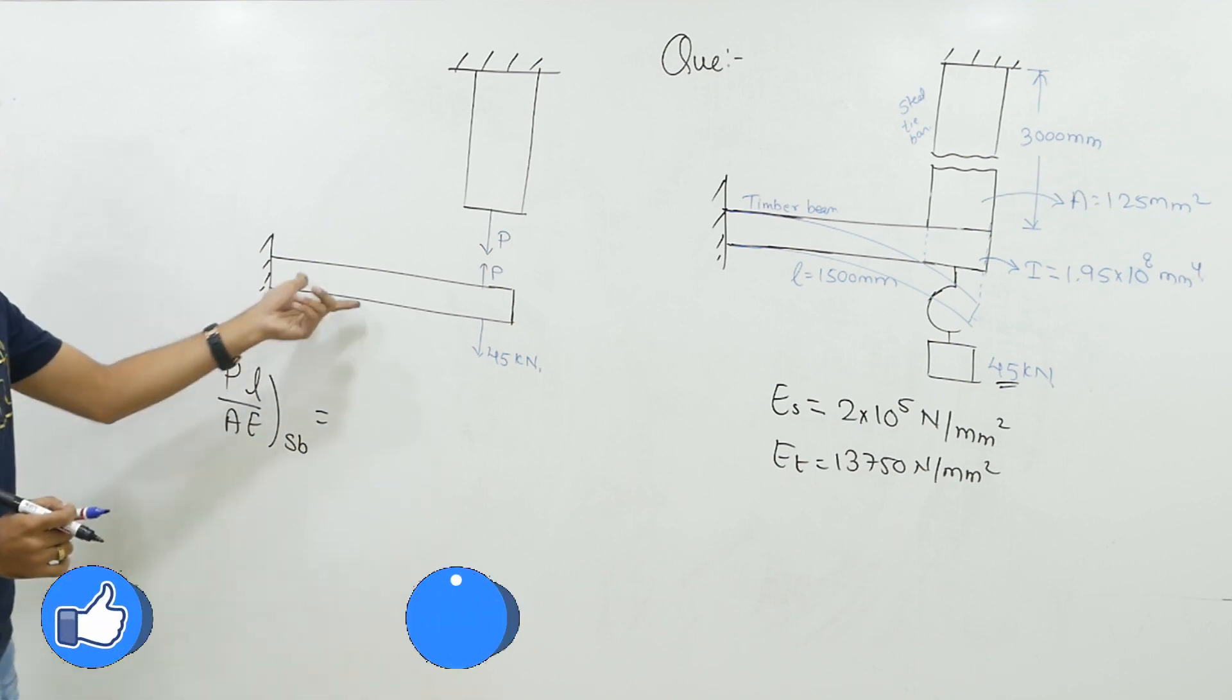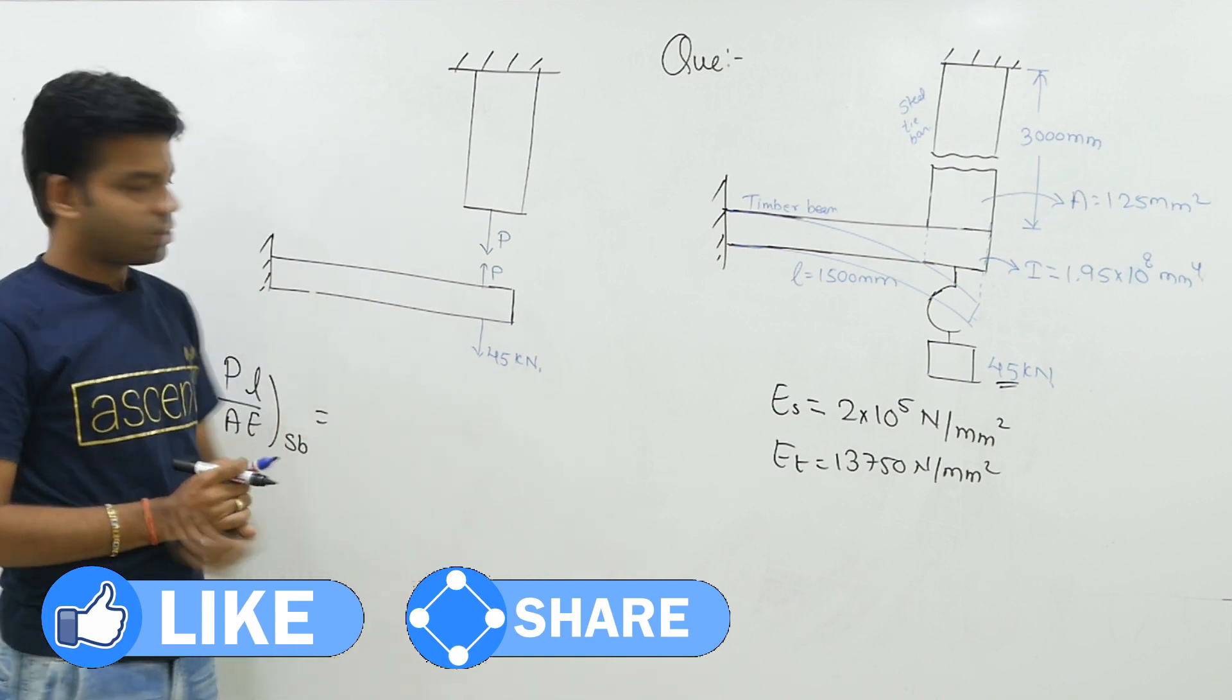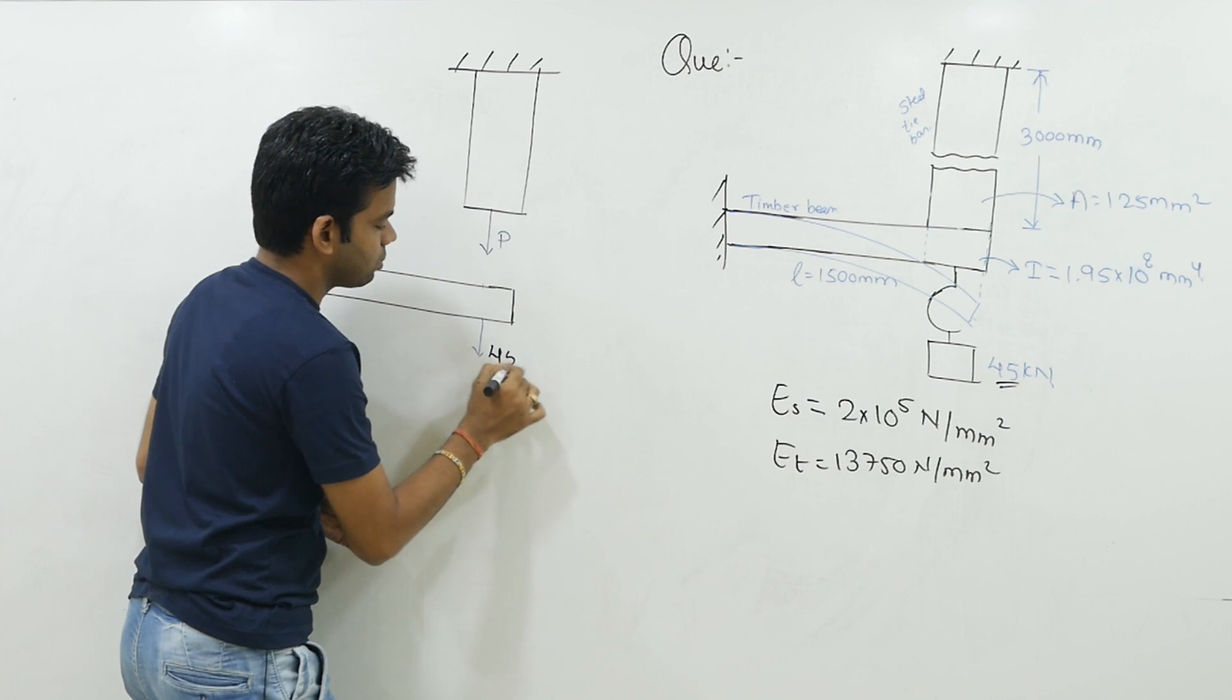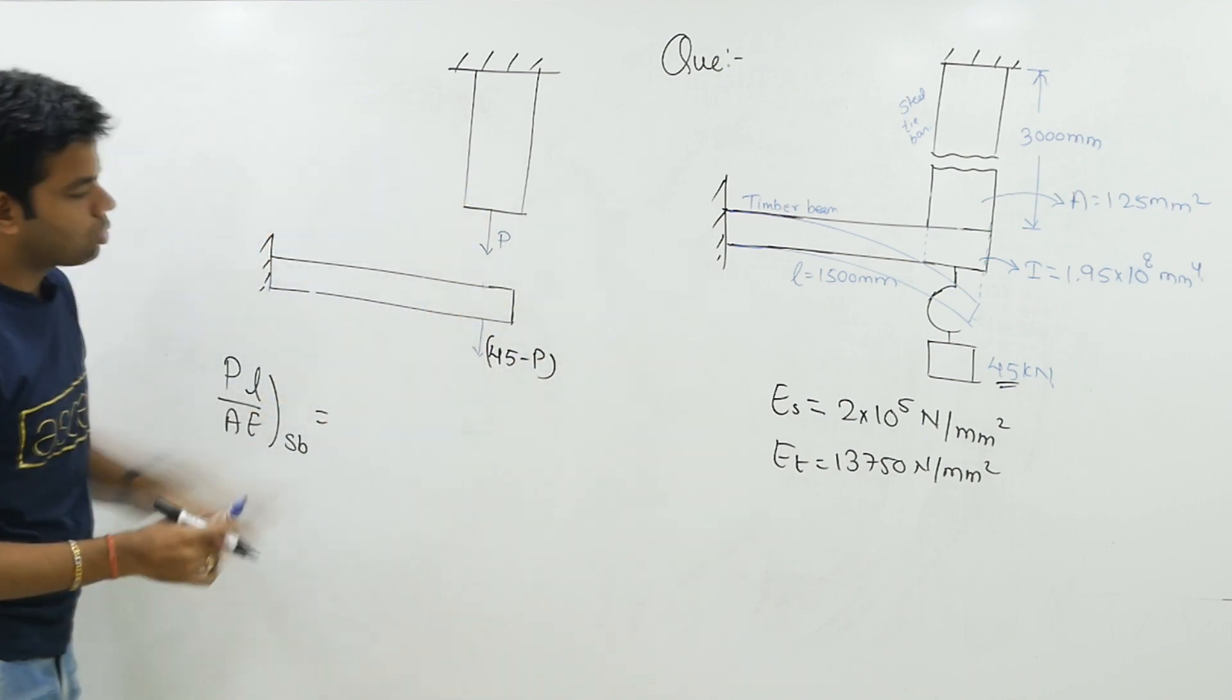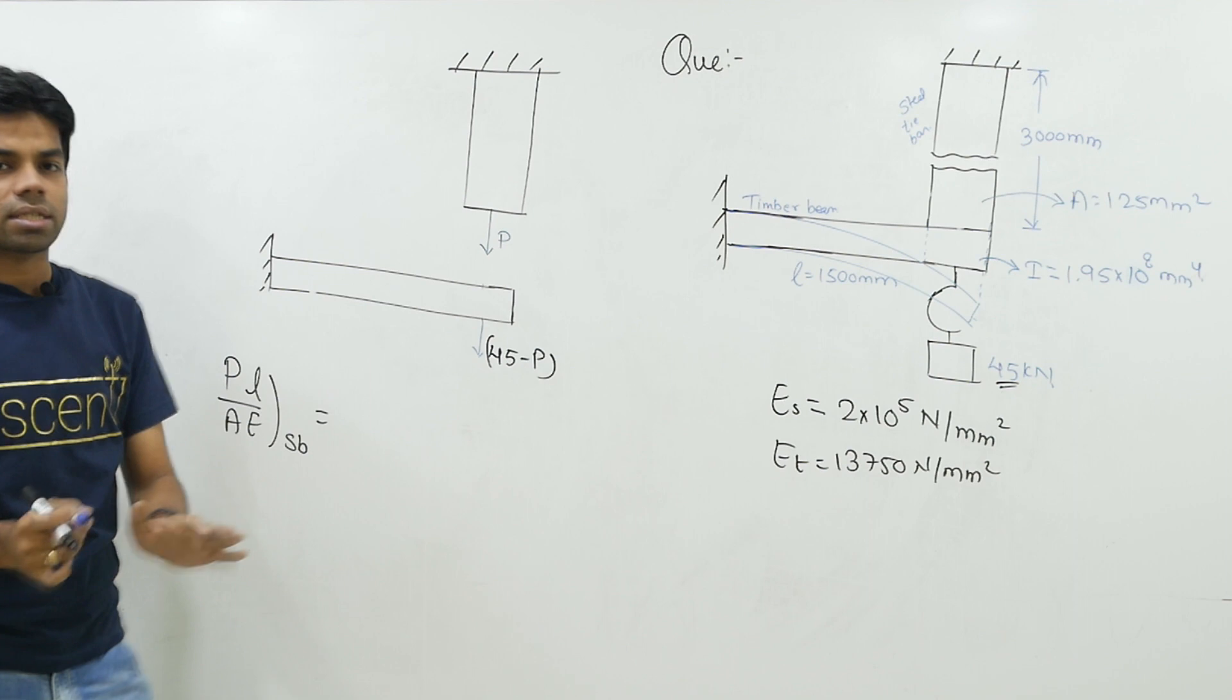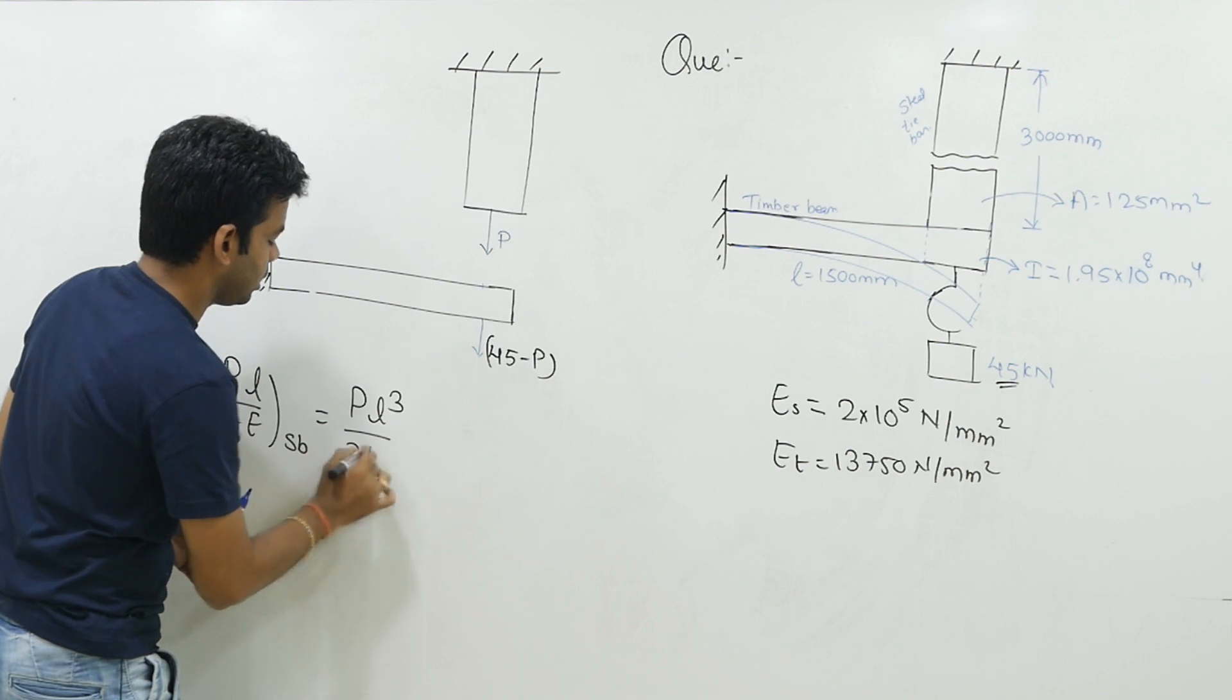This is equal to total deflection of this timber beam. This is nothing but a cantilever beam which is subjected to point load at end. If I want to write this further, the load acting is 45 minus P downward. So deflection for cantilever beam with point load at end, we know the formula: PL³/3EI. That's it.